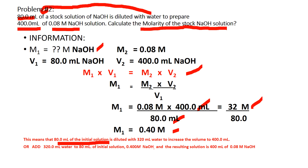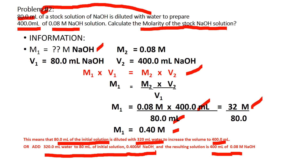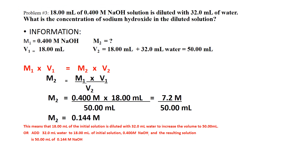The answer is 0.4 molar. This means 80 mL of the initial concentration of 0.4 molar NaOH is diluted with 320 mL of water to increase the volume to 400 mL. Add 320 mL of water to 80 mL of the initial solution, and the resulting solution is 400 mL of 0.08 molar NaOH.